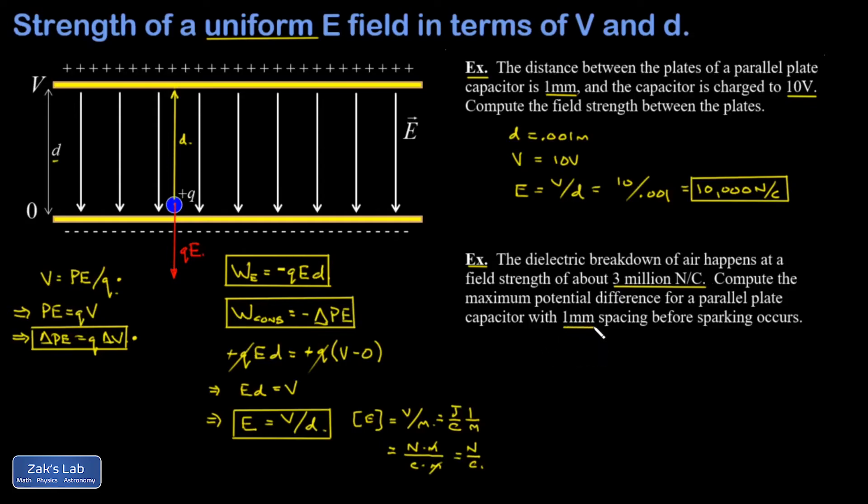The question is: given the same 1 millimeter plate spacing, what's the maximum potential difference before it sparks? D is 0.001 meters, and we want to reach the sparking threshold at an electric field strength of 3 times 10 to the 6th newtons per coulomb. What's the potential difference corresponding to that? Simply turn around the formula: V equals ED, which is 3 times 10 to the 6th times 0.001 meters, giving a potential difference of 3,000 volts. If you charge this capacitor to 3,000 volts, that's the threshold where a spark will discharge it back to zero.